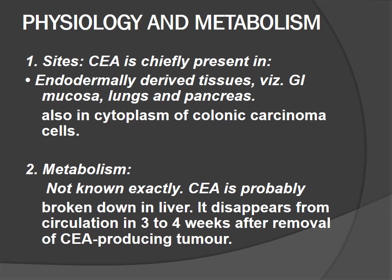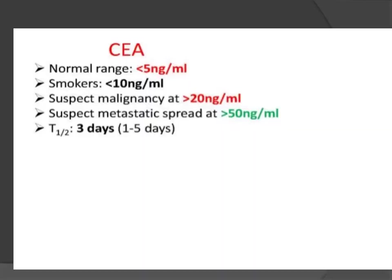Physiology and metabolism: CEA is primarily present in endodermally derived tissue — GI mucosa, lung, and pancreas — and also in the cytoplasm of colonic carcinoma cells. Metabolism is not known exactly, but CEA is broken down in the liver. It disappears from circulation within 3 to 4 weeks after tumor removal. Normal range is less than 5 nanograms per ml; for smokers, less than 10 nanograms per ml. Malignancy is suspected at greater than 20 ng/ml, and metastatic disease at greater than 50 ng/ml. Half-life is 3 days.